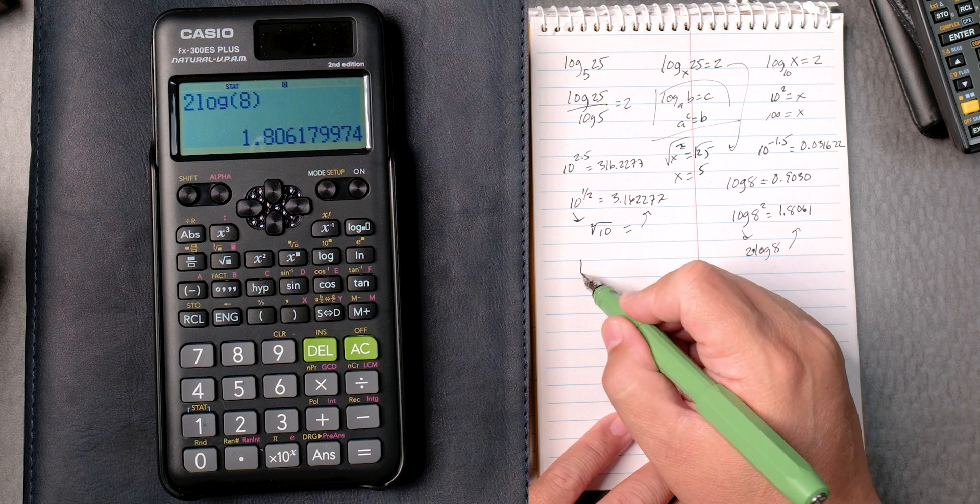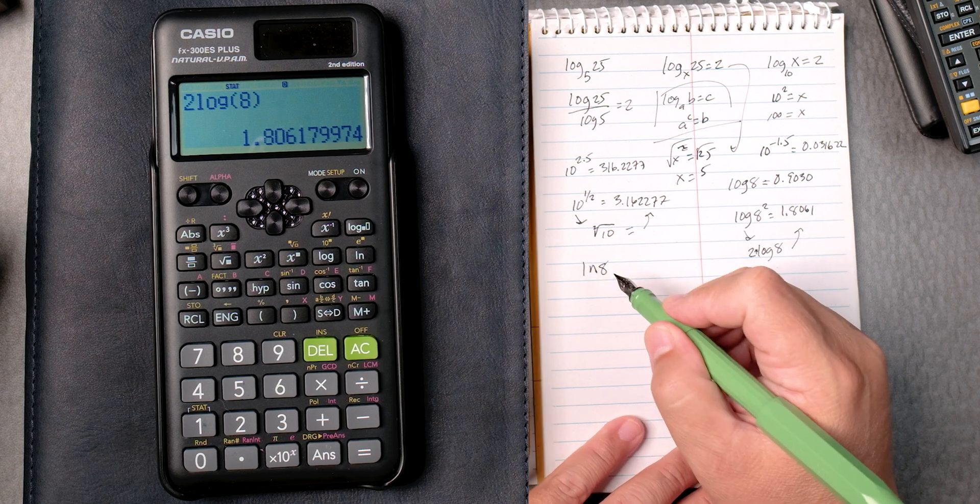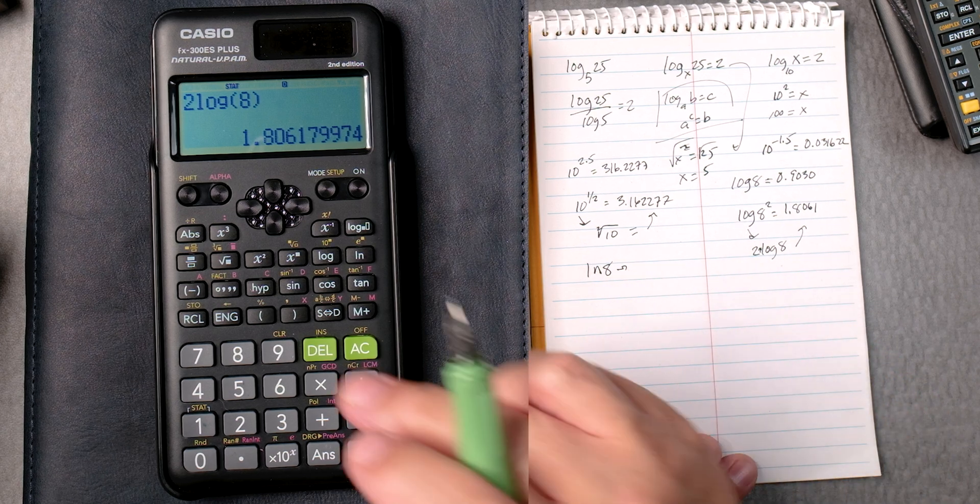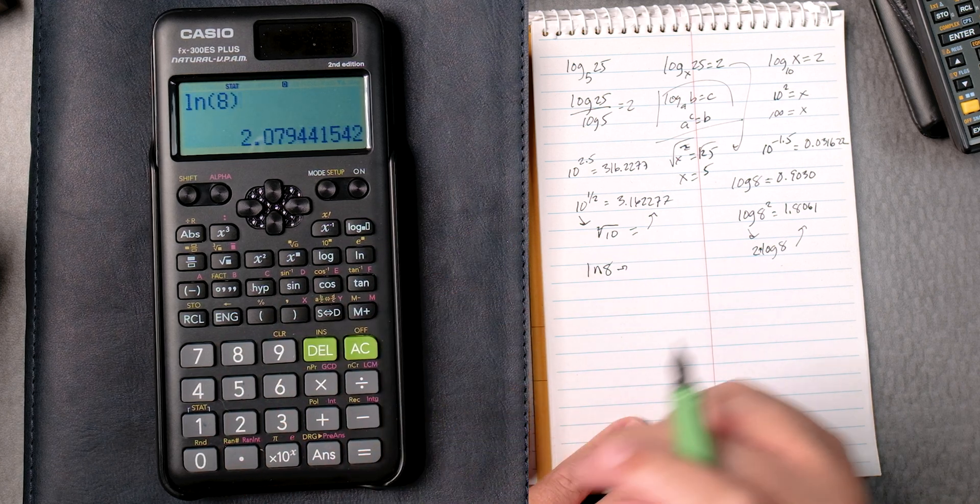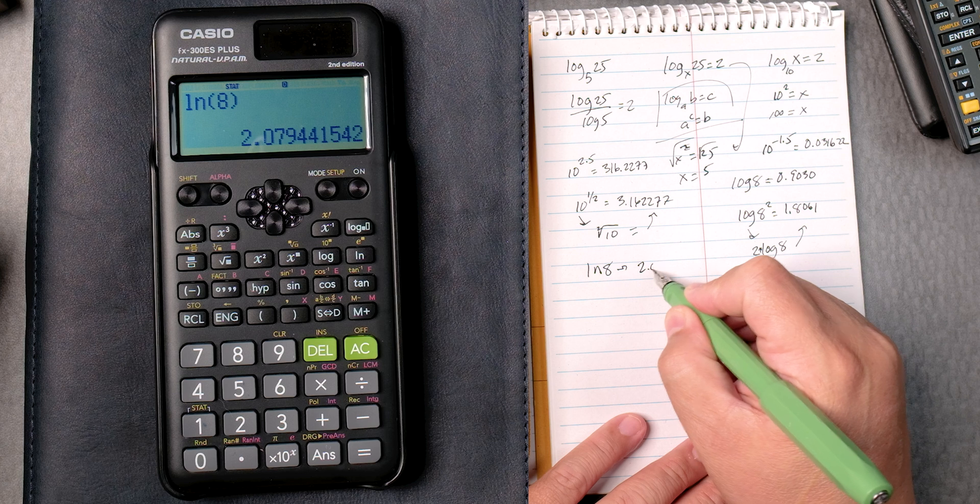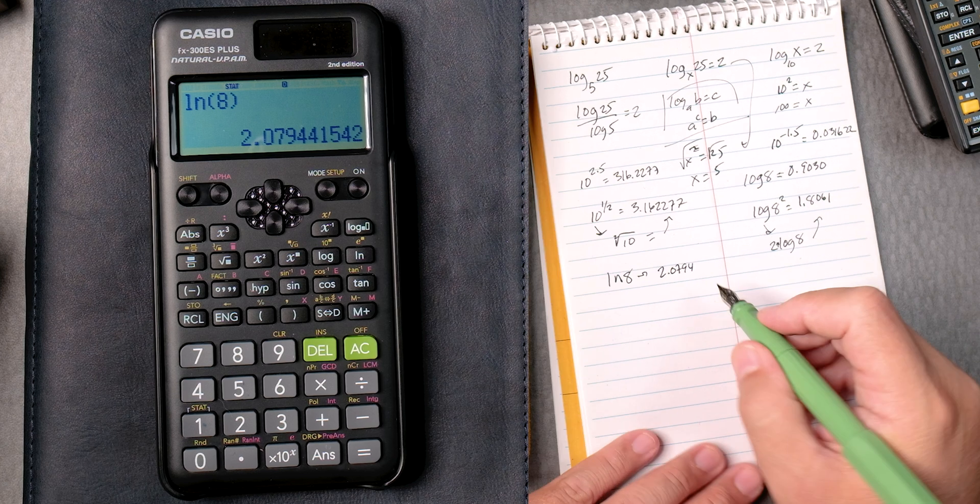Now, sometimes you have the natural log of 8. So that's going to be natural log, which is over here, 8. You can close it if you like. You press equals 2.0794. And it keeps on going.